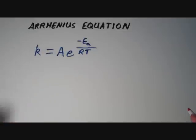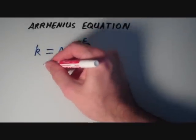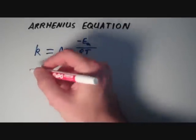K, as we know, is the rate constant. The parameter A, this is called the frequency factor.